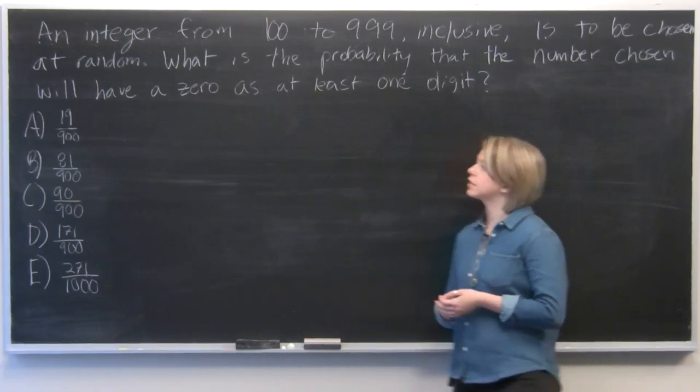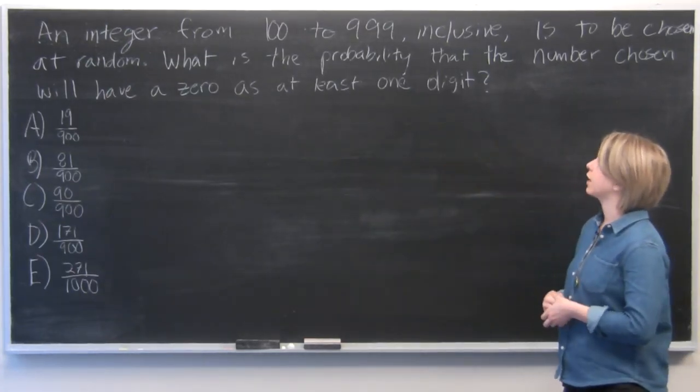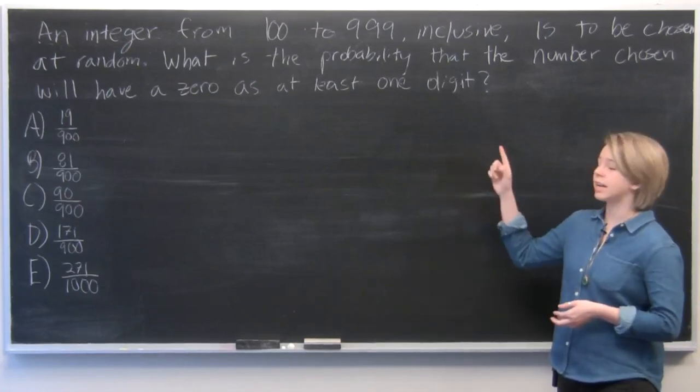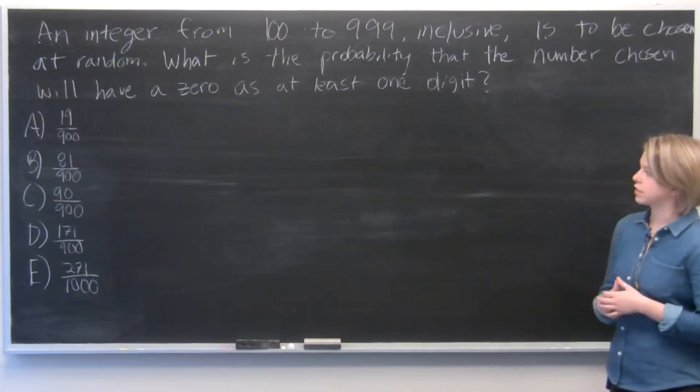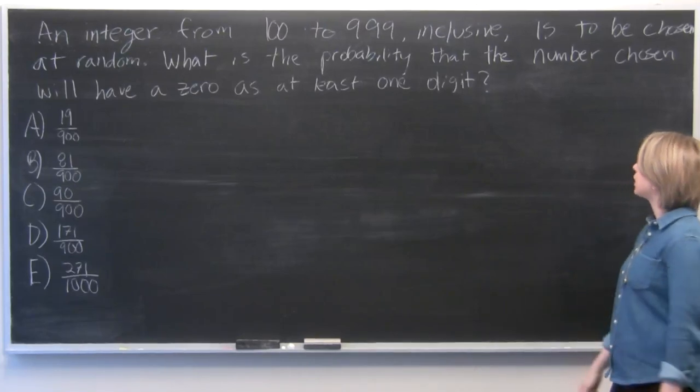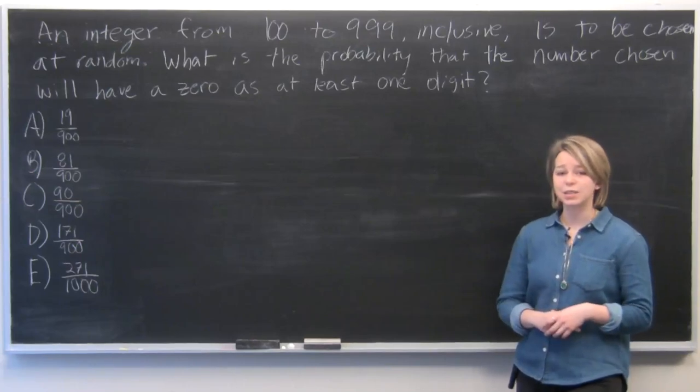So our problem states: an integer from 100 to 999 inclusive, which means that 100 and 999 are both included in the list, is to be chosen at random. What is the probability that the number chosen will have a zero as at least one digit?